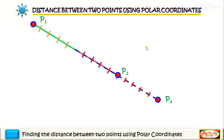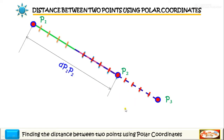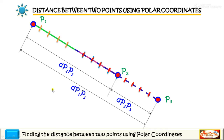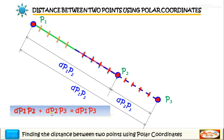Before we solve the problem, I will give you an idea on how to show or prove that three points P1, P2, P3 are collinear or in a straight line. Points are collinear if the distance from P1 to P2 plus the distance from P2 to P3 is equal to the longest distance P1 to P3. The equation is: d(P1,P2) + d(P2,P3) = d(P1,P3). This is the equation we are going to use in proving that three points are collinear.